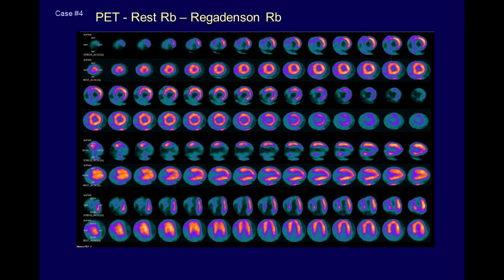This one also shows TID — transient ischemic dilatation. The cavity appears much bigger at stress than at rest. It's a sign of multivessel disease. It's not that we actually made the cavity any bigger — I just gave them a vasodilator while they're laying on a table. The tracer gets hung up in the outer areas of the myocardium and doesn't diffuse into the subendocardium, making the cavity look larger. You'll hear people talk about that upstairs. Looking from left to right it goes from apex to base, and it wraps around all the way up to the base.